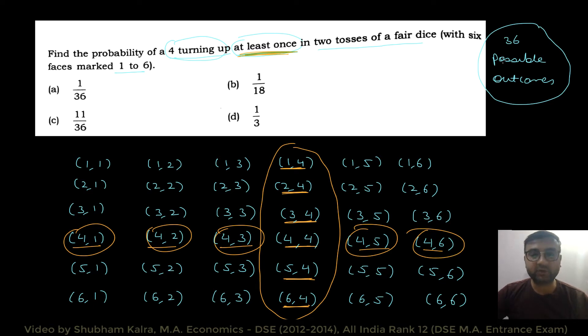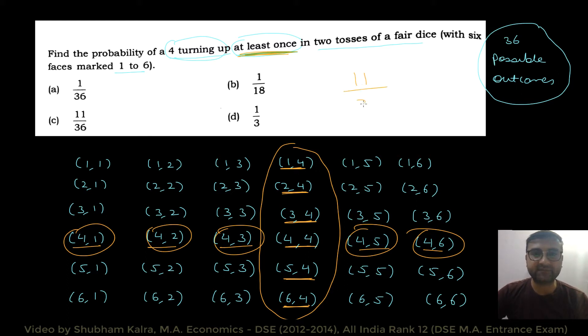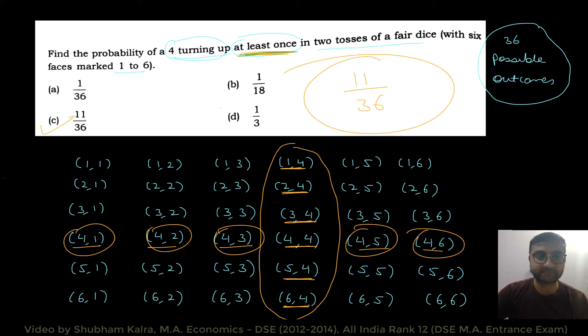In total humare paas 36 possible outcomes hain, jo ki hain equally likely. Toh joh probability ho jayegi, woh ho jayegi 11 divided by 36. That means the right answer is part C. Okay, let's move to the next question.